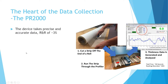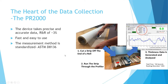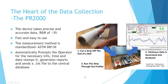The heart of the data collection is the PR2000. We get excellent data collection with a repeatability and reproducibility number of around 3% — anything less than 10% is considered good, so at 3% we're doing great. You cut a strip off the roll, profile it, and you get your data and summary statistics. It's fast and easy to use, and it fully complies with ASTM D8136. After the operator runs the roll and sees the data, it automatically prompts him to save and generates a text file.